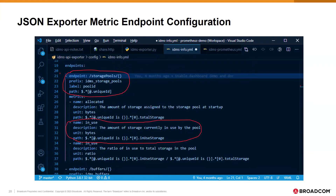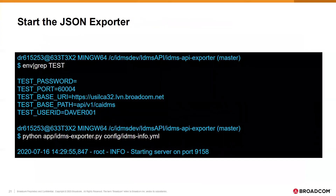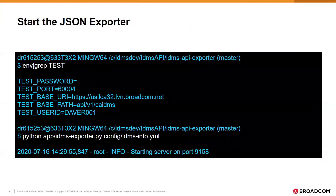Multiple metrics endpoints can be specified, each with multiple metrics data attributes. Here we define the storage pools endpoint — note the substitution parameter placeholder for the job name. Since there are multiple storage pools, we also specify the ID that identifies each pool. For the detailed metrics returned by the endpoint, we define the name as it will appear in the exporter response and the JSON path to get the attribute data, with a substitution parameter placeholder for the unique pool ID. We set the user credentials and base URL in environment variables, then start the Python script that implements the JSON exporter, pointing it at the configuration file that defines the endpoints and metrics.